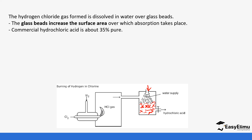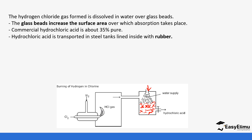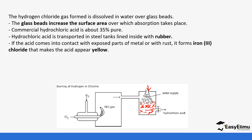The hydrochloric acid produced is usually around 35% concentration. It is transported in steel tanks lined with rubber, because hydrochloric acid reacts readily with metals. If there is an exposed metal part, the acid will react with it to form iron chloride, which makes the acid appear yellow.